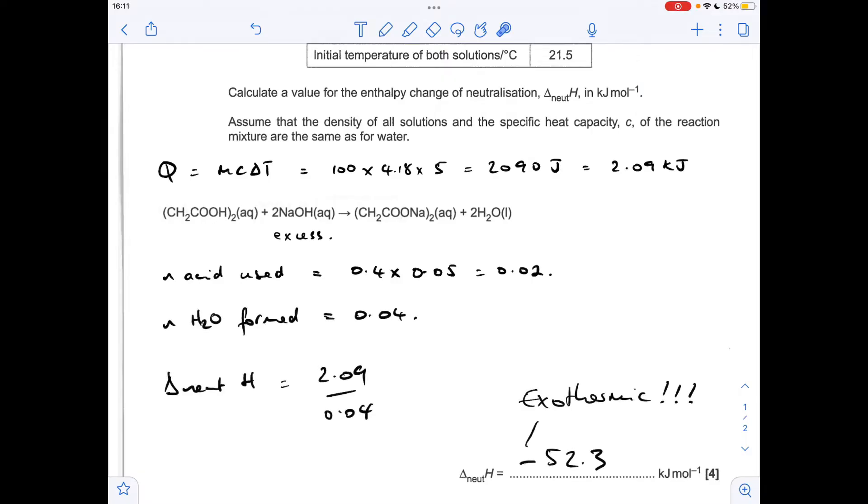So the enthalpy change of neutralisation is the kilojoules divided by the moles. And remember it's an exothermic reaction. Temperature went up by 5 degrees C, so we need a minus sign. So it's minus 52.3 kilojoules per mole.